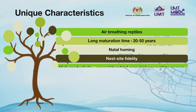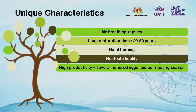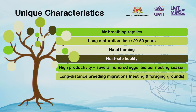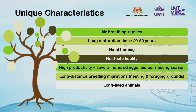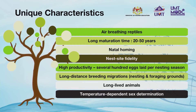Sea turtles will lay several hundred eggs in one nesting season. They conduct long-distance breeding migrations between foraging and nesting grounds. They are long-lived animals and can live up to 100 years. Like other reptiles, the sex of hatchlings is dependent on temperature during incubation, particularly during the third or fourth weeks. Higher temperatures will produce females and cooler temperatures will produce male hatchlings.